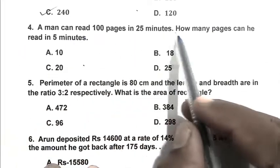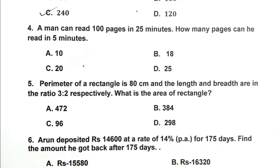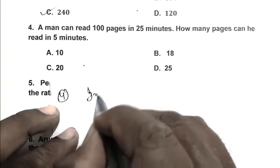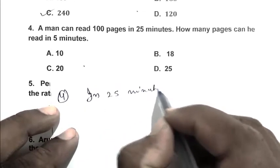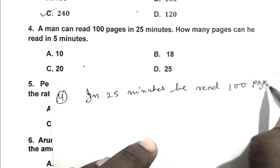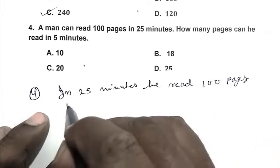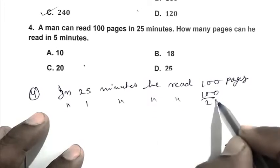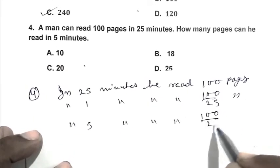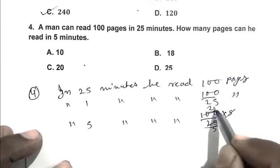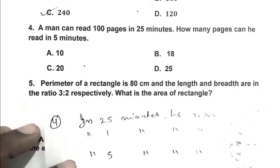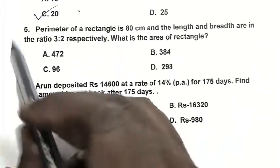Question number 4: A man can read 100 pages in 25 minutes. How many pages can he read in 5 minutes? We can calculate it from unitary method. In 25 minutes he reads 100 pages. In one minute he reads 100 by 25 pages. In 5 minutes he reads 100 by 25 multiplied by 5 pages, that's 20 pages. So C is the right answer.